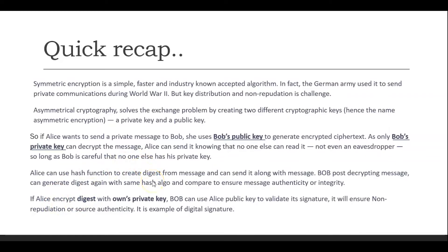The second concept is integrity or message authenticity. There is a hashing function that does not need any key. Along with the message, Alice can create a digest using the hash function — it is always the same size — and send it along with the message. Bob can decrypt the message and then generate the hash again with the same algorithm and compare it. This gives message authenticity, confirming the message was not changed over the wire.